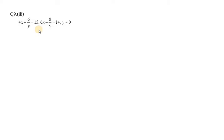Now you can see that the equations are symmetric - y is in the denominator in both cases. Therefore there's no need to remove the denominator here. We can use the elimination method again. We have 4x plus 6 over y equals 15, and 6x minus 8 over y equals 14.